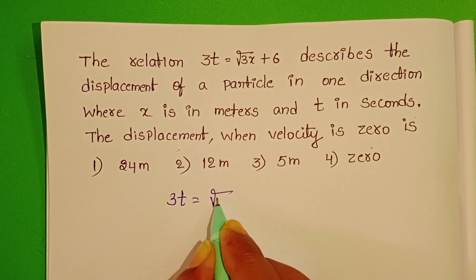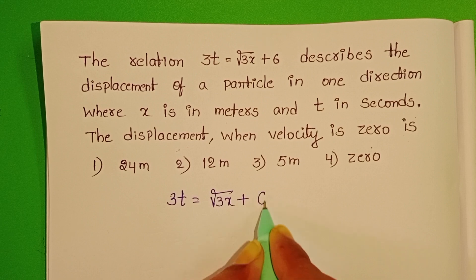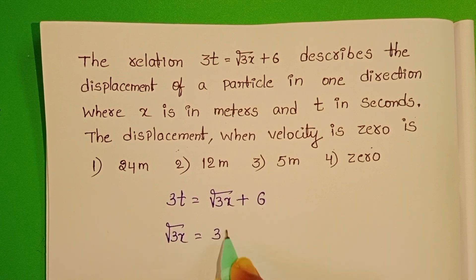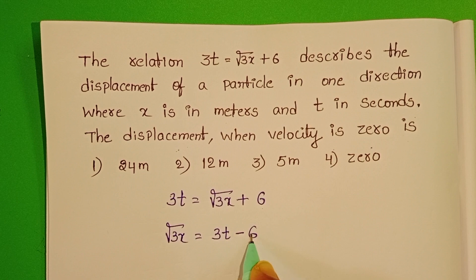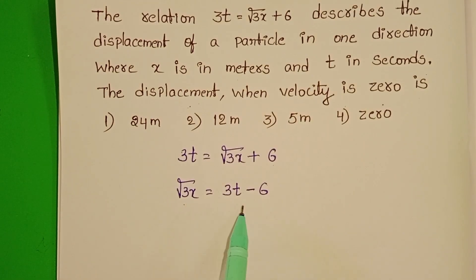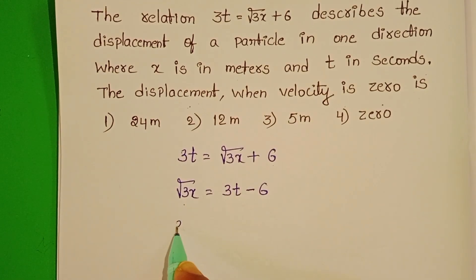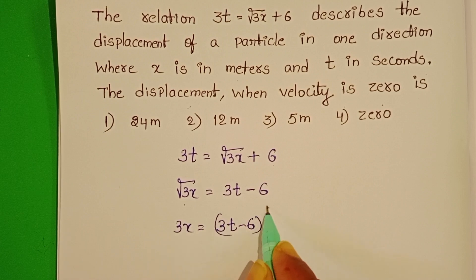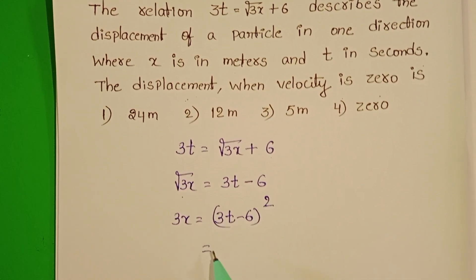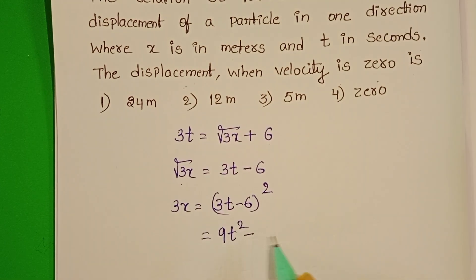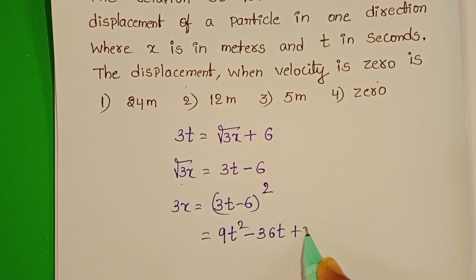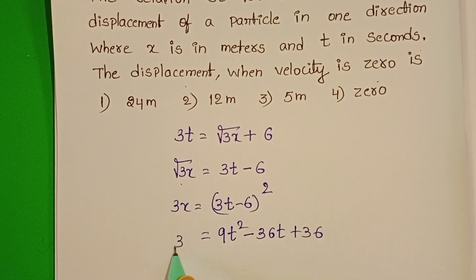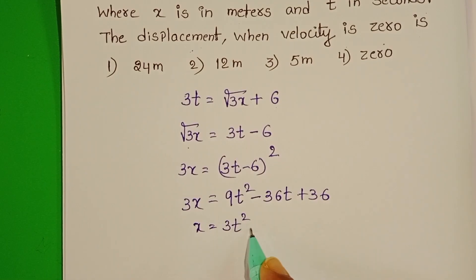3t equals square root of 3x plus 6. Square root of 3x equals 3t minus 6. Squaring on both sides: 3x equals (3t minus 6) whole square. This is like the a minus b whole square form: 9t squared minus 36t plus 36. Dividing by 3 gives x equals 3t squared minus 12t plus 12.